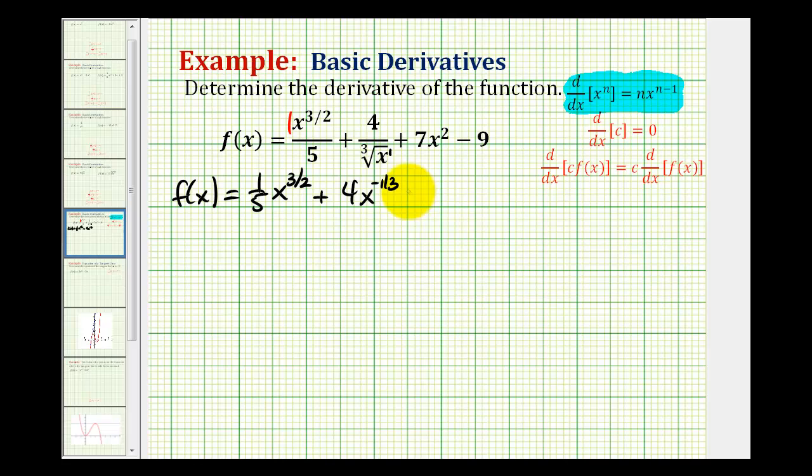And then we can leave the last two terms the way they are. So we have seven x squared and then minus nine. And now we can find the derivative of each term.